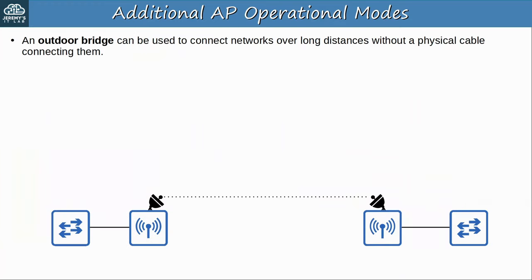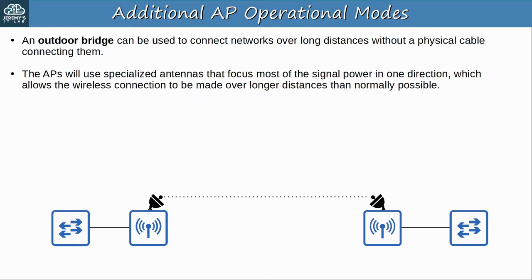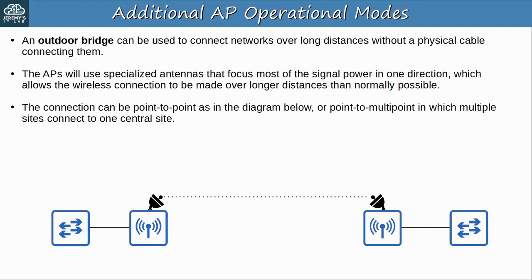The final mode is outdoor bridge. An outdoor bridge can be used to connect networks over long distances without a physical cable connecting them. The APs use specialized antennas that focus most of the signal power in one direction, allowing the wireless connection to be made over longer distances than normally possible. The connection can be point-to-point — just two sites being connected — or point-to-multipoint, in which multiple sites all connect to one central site, forming a hub-and-spoke topology.